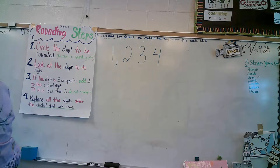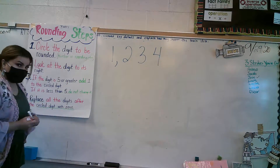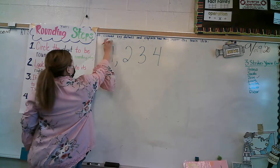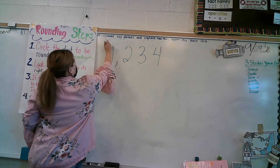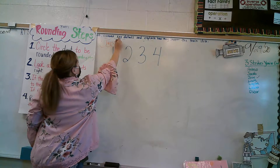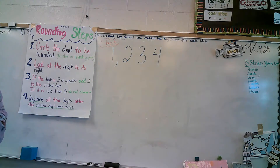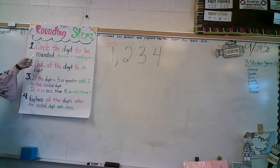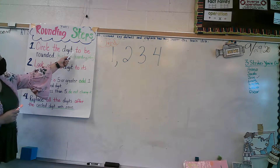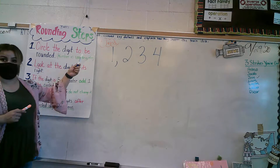We did the hundreds. Now let's say we need to round to the nearest tens. Following my steps, I'm going to figure this out. So I'm going to circle the digit to be rounded. So what digit is in the tens place?